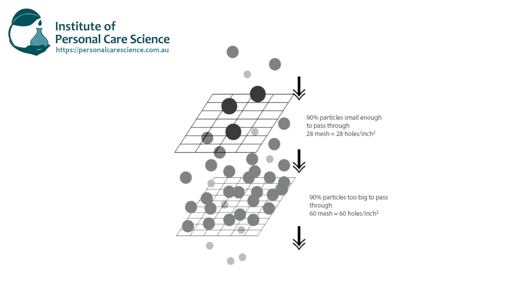When it comes to mesh size it can sometimes be a little confusing. You'll typically see it written as 28/60 or similar numbers. Mesh size gives you a measurement based on how many openings there are per square inch — so a mesh size of 28 means 28 openings per square inch, and 60 means 60 openings per square inch. The larger the mesh size, the smaller the openings and therefore the smaller the particle diameter. Two numbers are written because 90% of particles will fit through the smaller mesh number while 90% will be retained by the larger number, giving a good indication of the majority particle size.